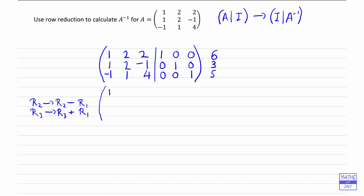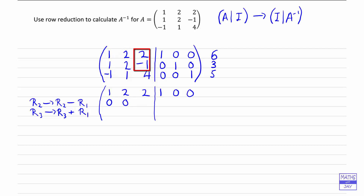So we're going to leave the first row exactly as it is. Let's put the bar in, and then we've got 1, 0, 0. Row 2 is going to become row 2 minus row 1: 1 minus 1 will be 0, which is what we wanted; 2 minus 2 is 0; negative 1 minus 2 is negative 3. Then 0 minus 1 is negative 1; 1 minus 0 is 1; and 0 minus 0 is 0. And the last row: negative 1 plus 1 will give us 0, so that's good — our first column is what we want.